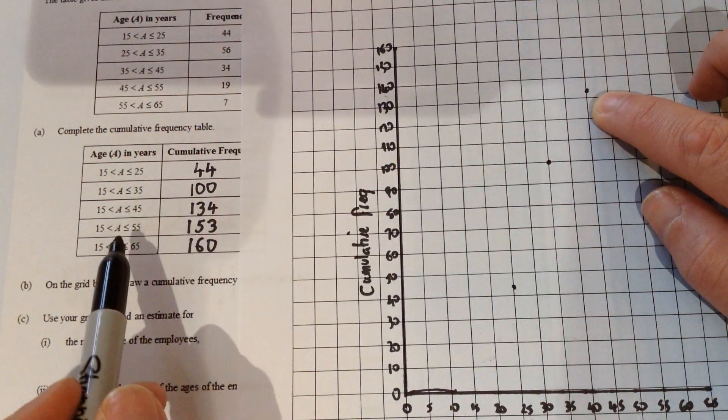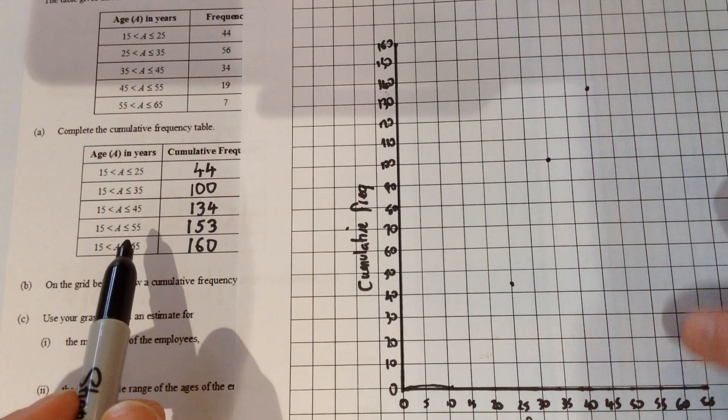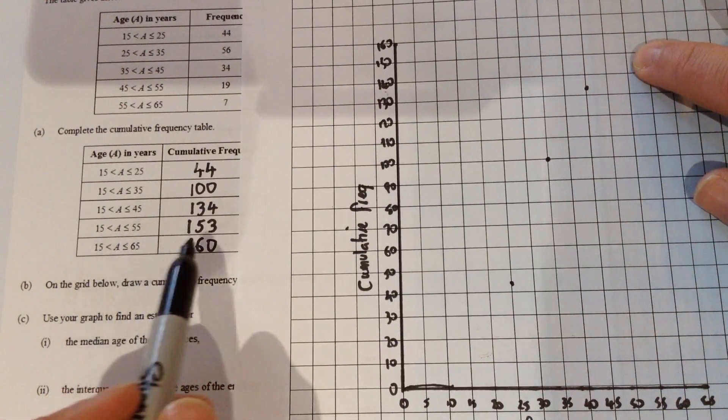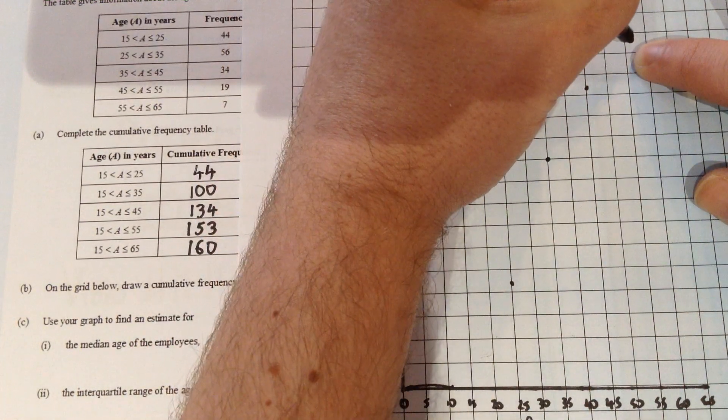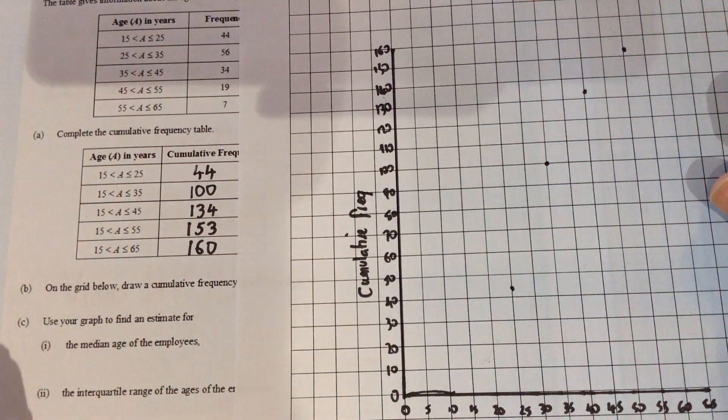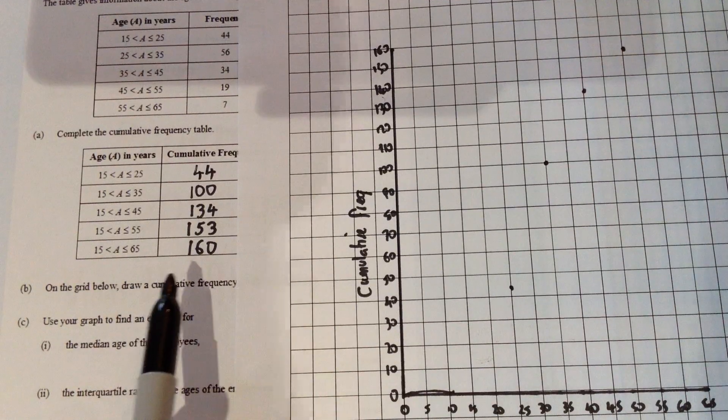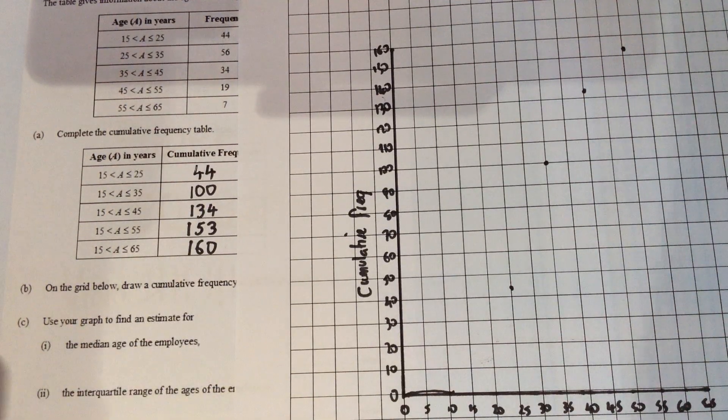The next group goes all the way up to 55, so we go to 55 on the bottom but up to 153 this time. So 153 puts us somewhere up here. And the final group goes up to 65 and it has a total cumulative frequency, should I say, of 160.